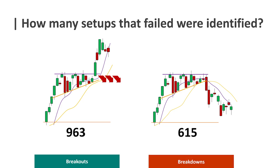That's why I initiated this second deep dive where I was looking for the setups that failed, with the assumption that understanding why they fail could help better predict and be in the stocks that are about to break out. A total of 615 breakdowns were identified — a pretty high number. Later in the presentation, I'll compare the breakouts and breakdowns on different parameters. What you see on the left is referred to as breakouts, what you see on the right is referred to as breakdowns.